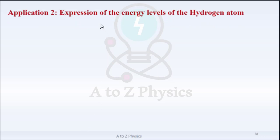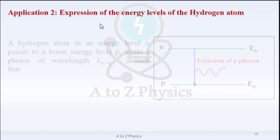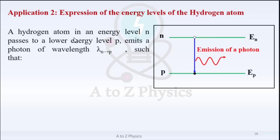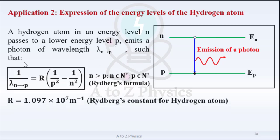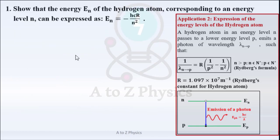Application 2: In this application, we are going to determine the expression of the energy levels of the hydrogen atom. A hydrogen atom in energy level N passes to a lower energy level P and emits a photon of wavelength λNP such that 1/lambda = R × (1/P² − 1/N²), where R = 1.097×10⁷ m⁻¹ is Rydberg's constant for the hydrogen atom. First part: show that the energy EN corresponding to energy level N can be expressed as EN = −HcR/N².